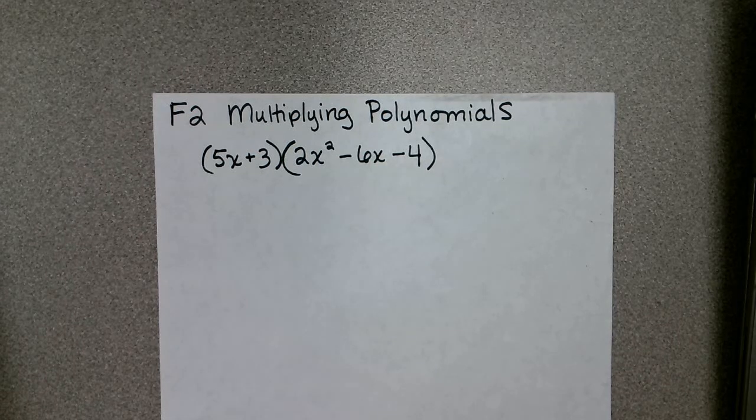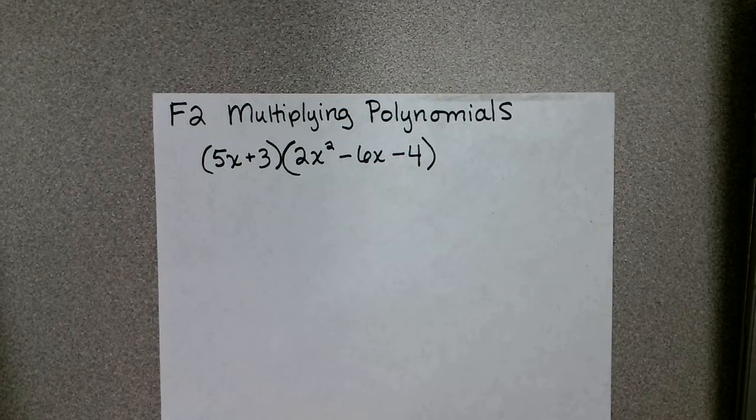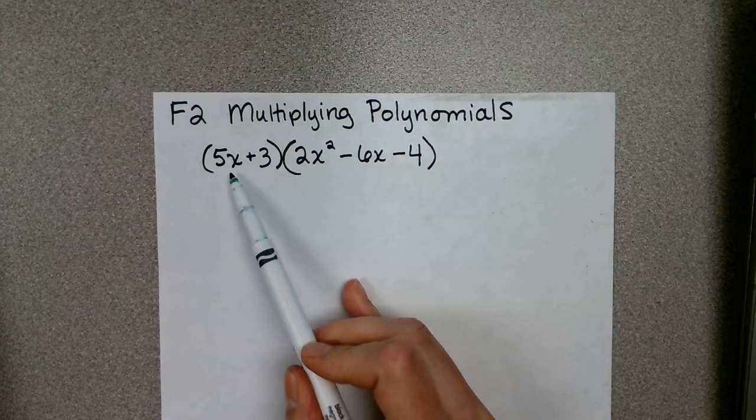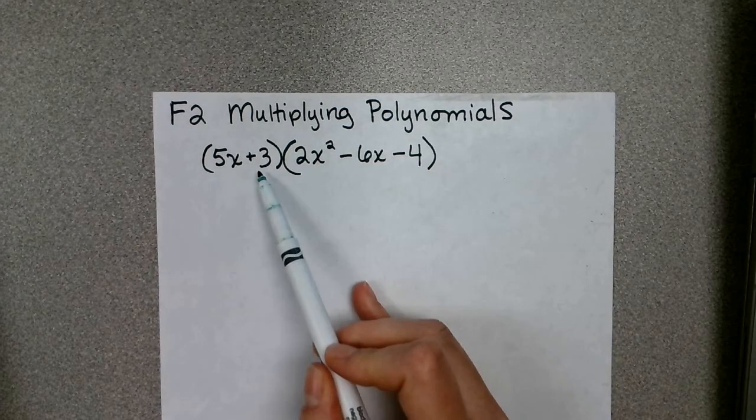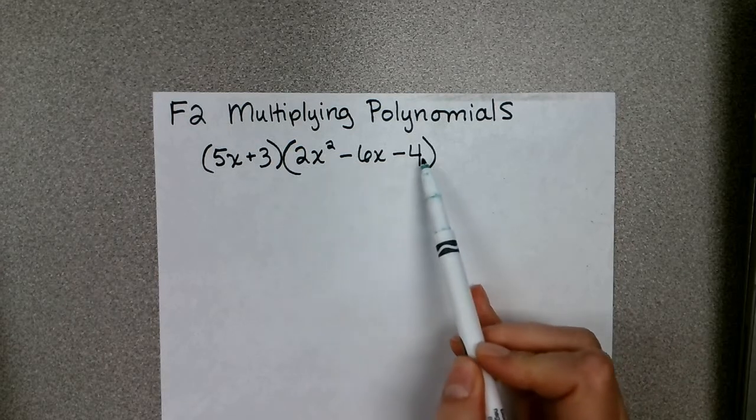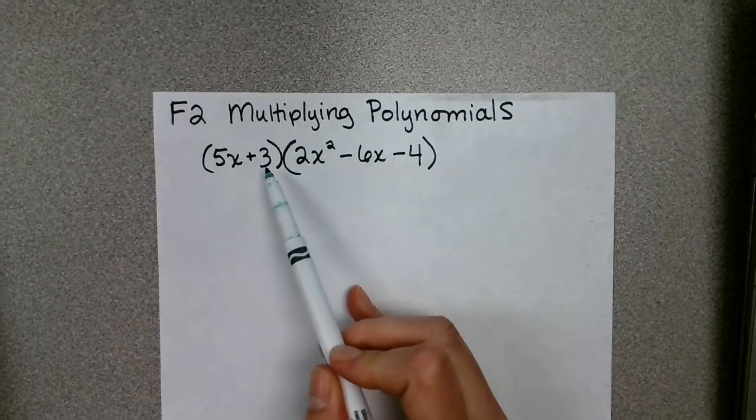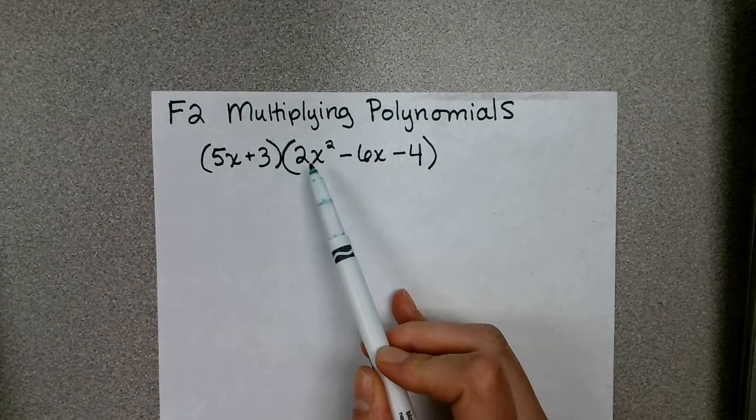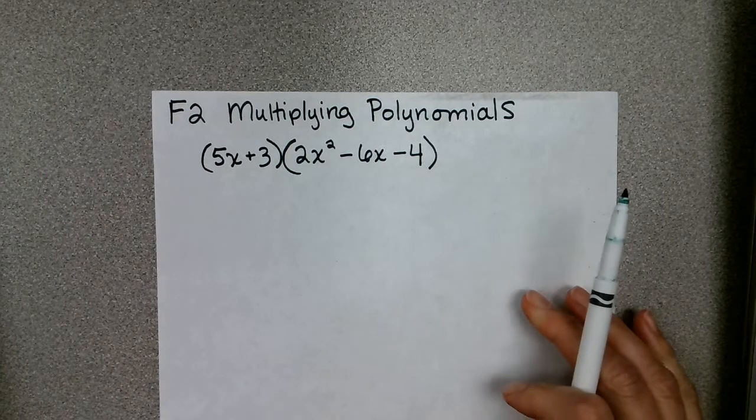Okay, we're going to look at one more problem where we are multiplying polynomials. This time it's a binomial times a trinomial. Again, binomial means you have two terms and trinomial means you have three terms.